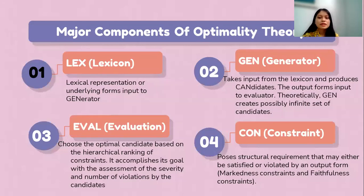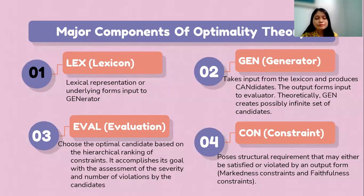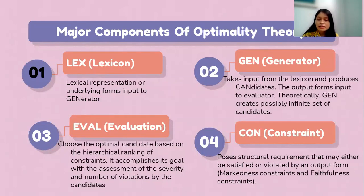Here are the major components of optimality theory. The first is LEX, or lexicon — lexical representation or underlying forms that serve as input to the generator. The second is GEN, or generator. It takes input from the lexicon and produces candidates — the output forms that serve as input to the evaluator. Theoretically, GEN creates a possibly infinite set of candidates.